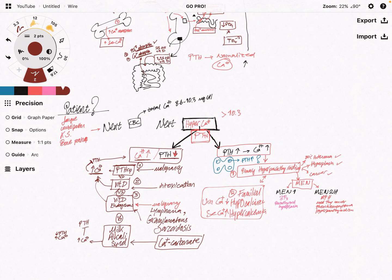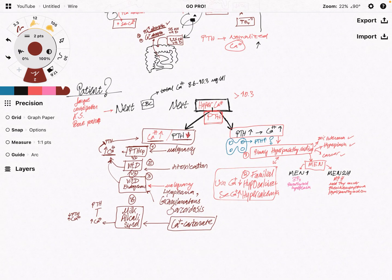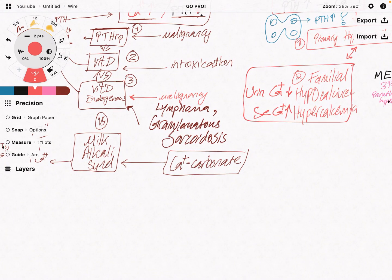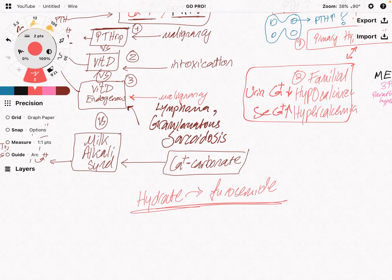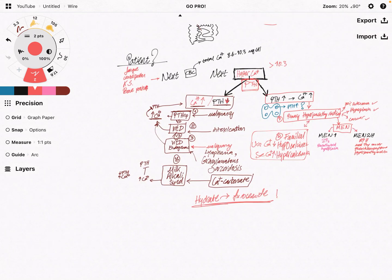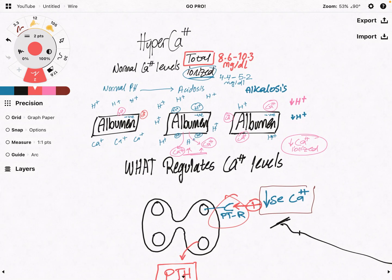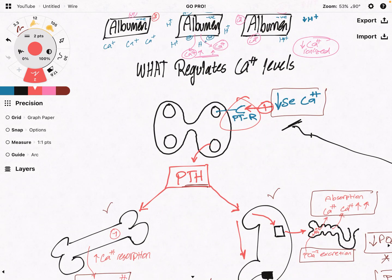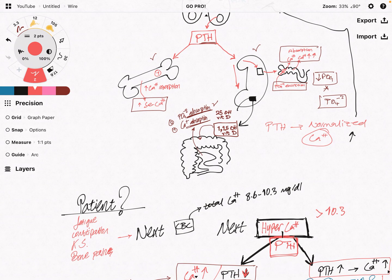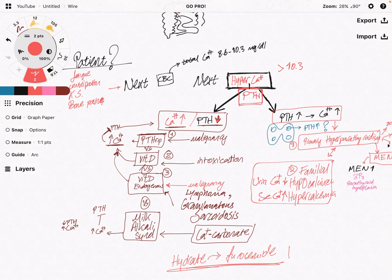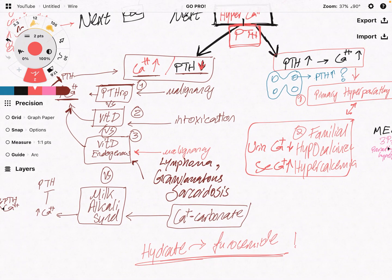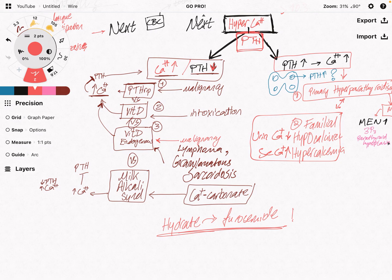Now we've covered the big picture of hypercalcemia. A generalized treatment protocol is that we need to hydrate the patient first, and after that we give furosemide — the diuretic — to inhibit the reabsorption of electrolytes, so that with fluid excretion, calcium is excreted as well. To recap the whole video: we spoke about how calcium is regulated in our bodies, how parathyroid hormone works on the bone, kidneys, and gut, and when we see a patient with hypercalcemia — what diseases to think of and how to differentiate between them. I'll see you in the next video.